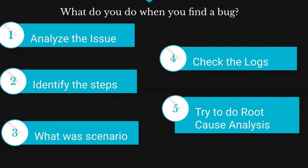Even if you are not able to get the root cause analysis, at least try to give maximum information to the developer. This creates a good impression on the entire team, because they'll know this person is genuine and giving full information with the logs, and the chances of your defect getting rejected will also get reduced. Sometimes it happens that functionality is working fine on the front end, but there are still stack traces or exceptions coming up in the logs. So it is very important to keep checking the logs and give every piece of information to the developer.